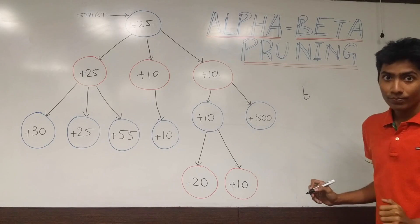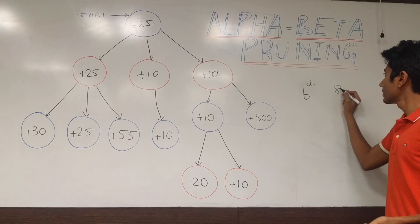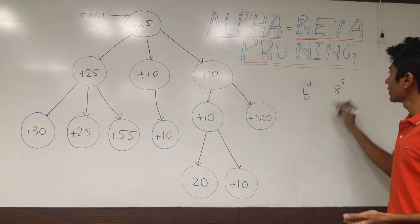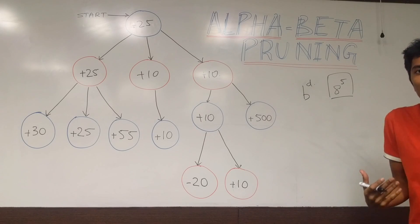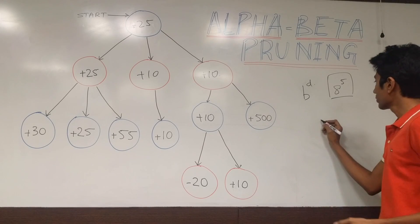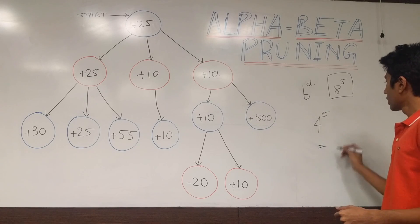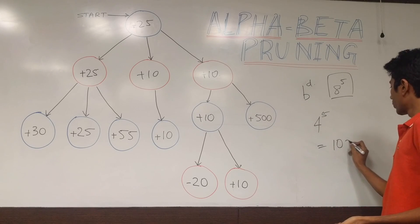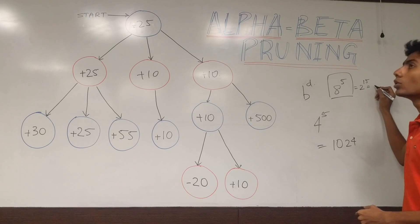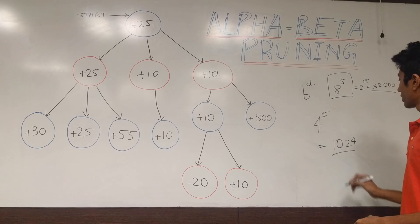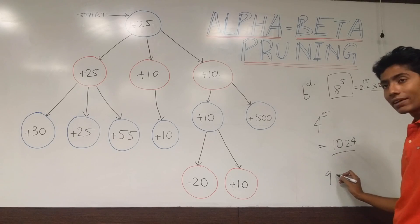Let's say you have a branching factor b and a depth d. If b is 8 and d is 5, you get 8^5 computations. What if I can reduce your branching factor by half — to 4 at the same depth? That's 4^5, which equals 2^10 = 1024, while 8^5 equals 2^15 = 32,000. So you're making savings of about 96–97 percent.